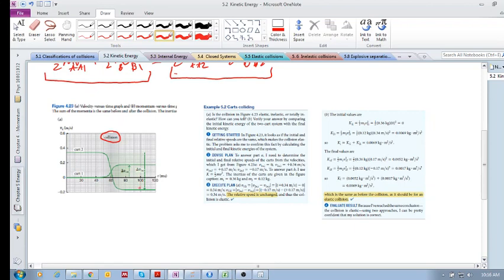These graphs are so difficult to read anyway. If you do it, you will see that the relative speeds before and after are the same. So what does that tell us? It tells us that we have an elastic collision.